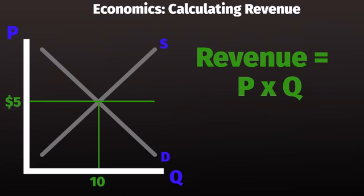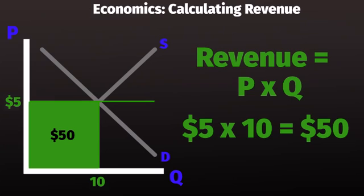Using these two numbers, what is our revenue? Our revenue is that $5 times the 10 units we sold, which is equal to $50, which is represented on the graph here by this green square.